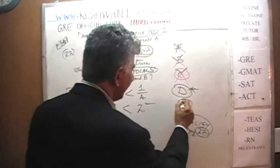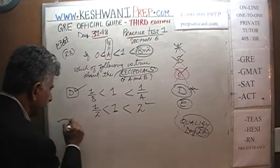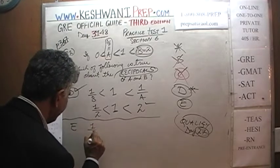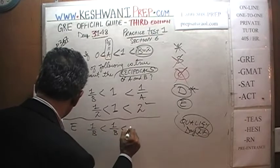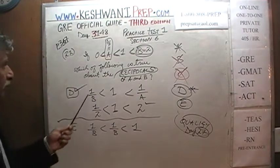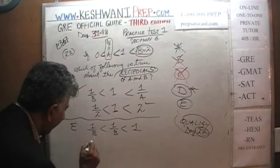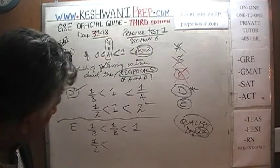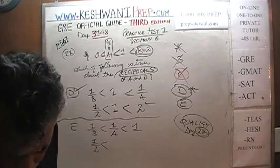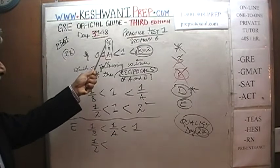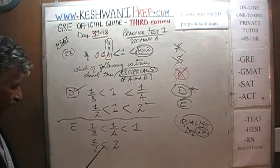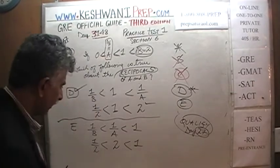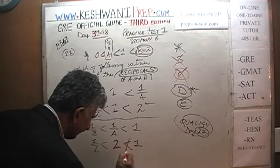Let's quickly see why E does not work. E says: 1 over B is less than 1 over A, which in turn is less than 1. B is 2, so reciprocal of B is one half. A is one half, so reciprocal of A is 2. One half is indeed less than 2, but is 2 less than 1? Of course not — 2 cannot be less than 1. It's wrong. The answer is D, as we said.